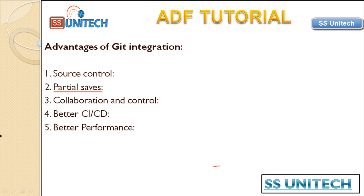The third advantage is collaboration and control. If you have multiple team members contributing to the same Data Factory, you may want to let team members collaborate via a code review process, which can be built inside the Git integration. You can also divide permissions — for example, some members will have permission to directly publish while others will go through Git.